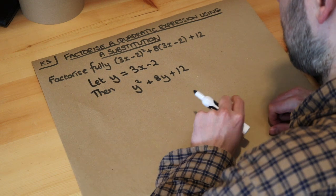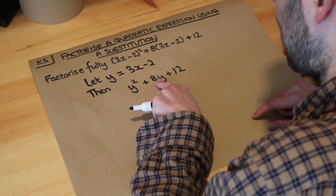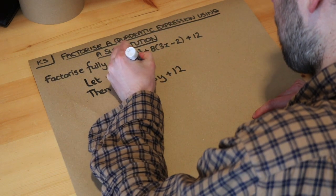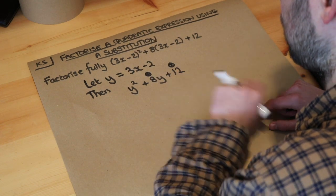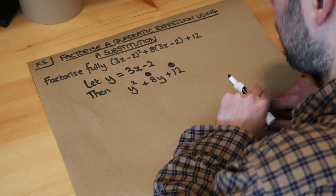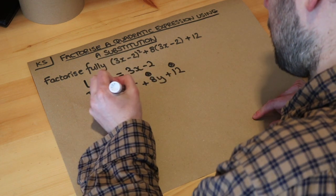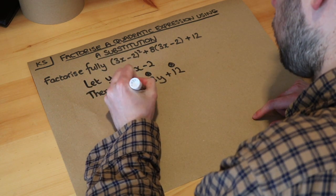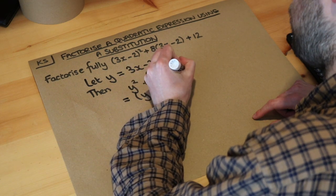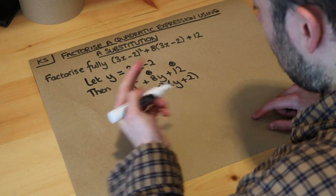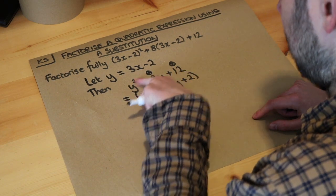So let's factorise this. We need two numbers that add to give 8 and times to give 12. What two numbers add to give 8 times to give 12? Well 6 and 2. So we know that we can factorise this as y plus 6 and y plus 2. And if you don't know this process please look at my earlier videos on how we factorise expressions like this.